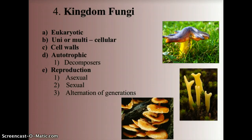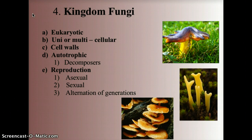The kingdom Fungi was originally part of the plant kingdom but has since been separated out. Fungi are eukaryotic and can be unicellular or multicellular. They have cell walls similar to plants and typically act as decomposers, breaking down dead matter. They reproduce asexually, sexually, and by a process called alternation of generations.